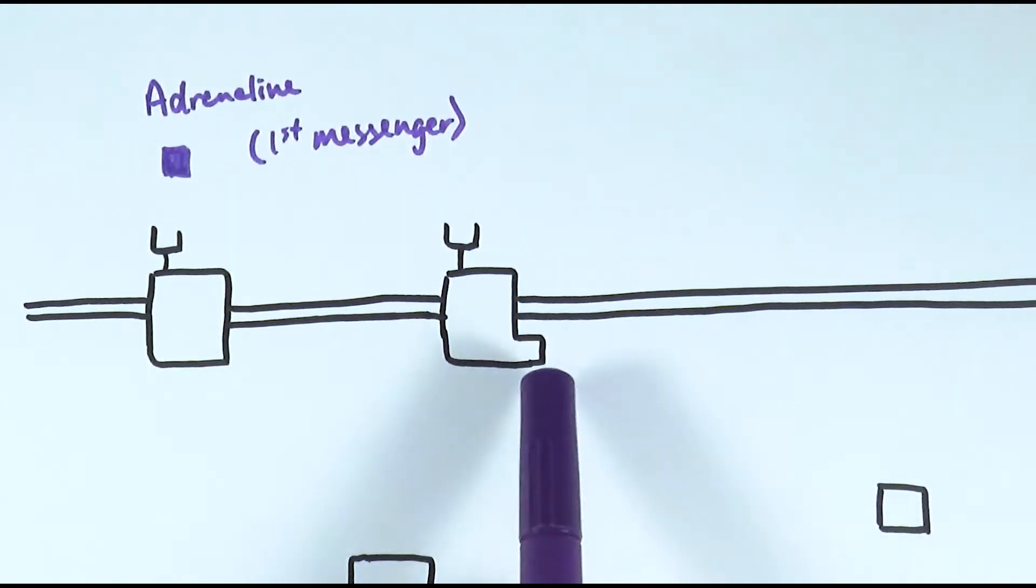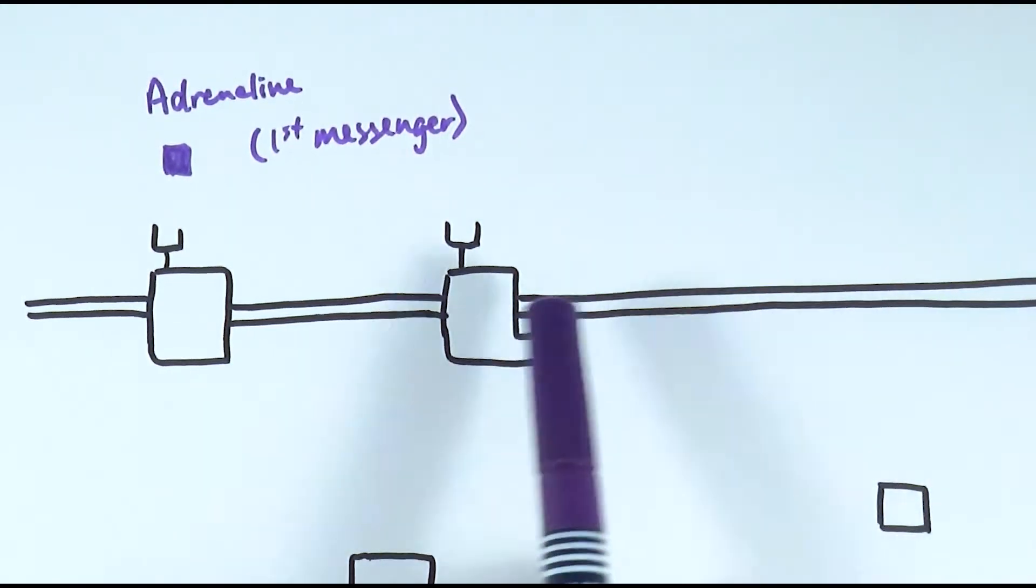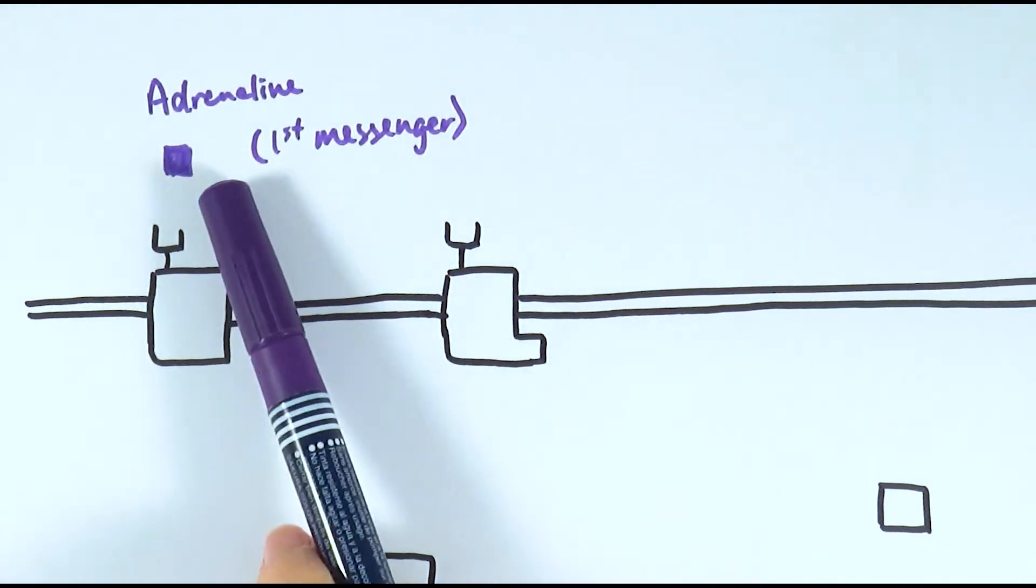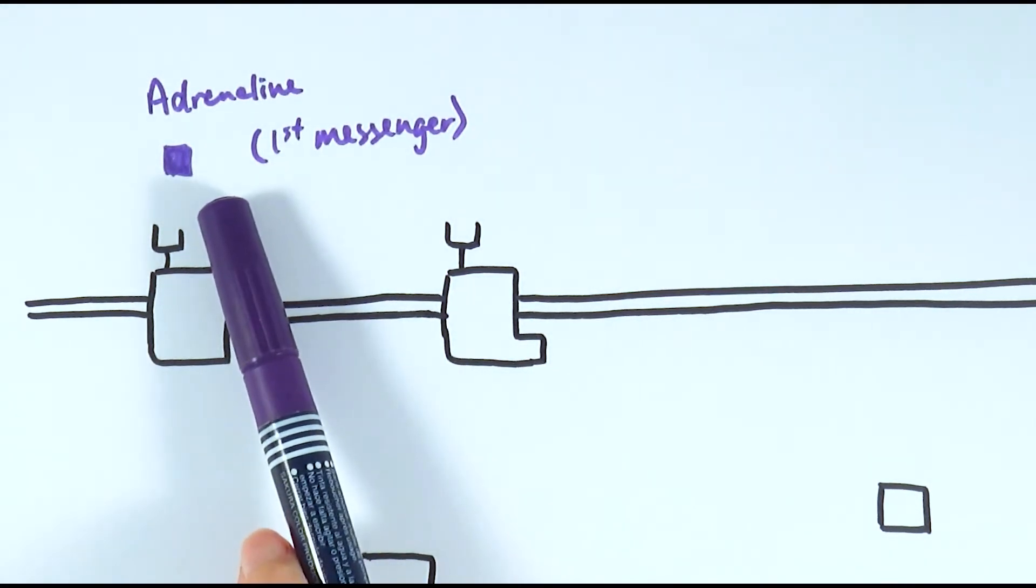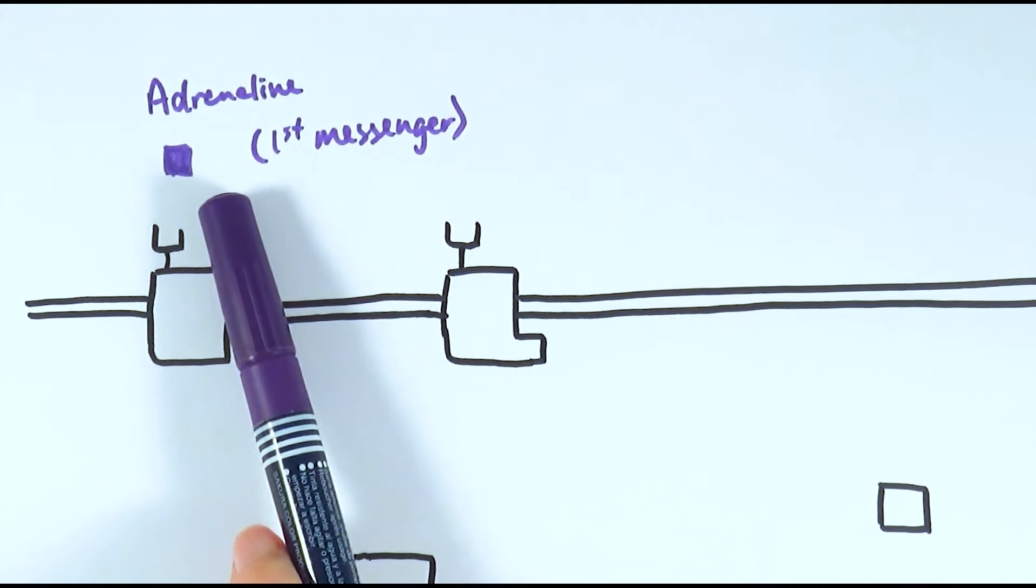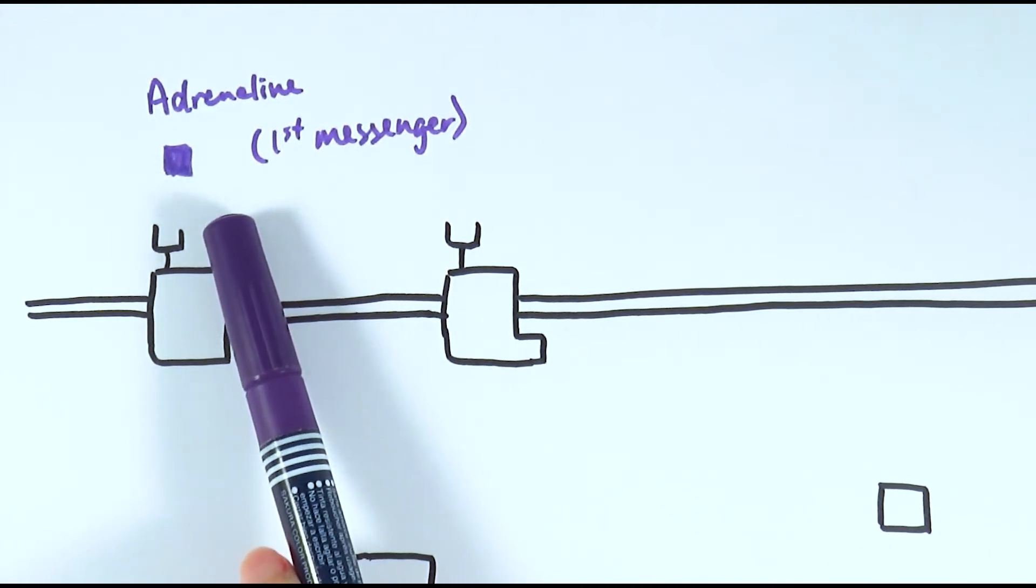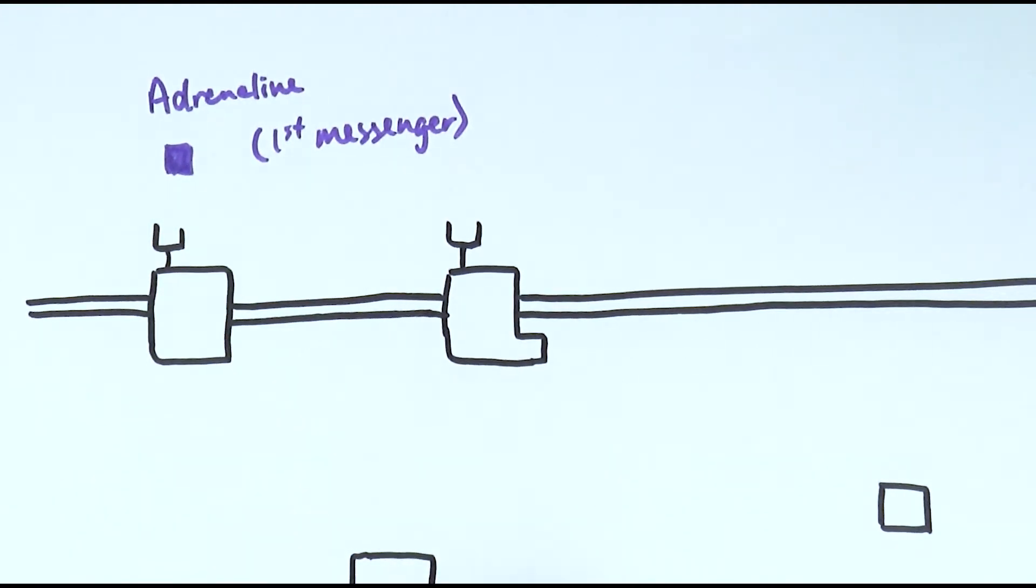To start off with, just to label some things, obviously that is the cell surface membrane and that is the adrenaline. Sometimes we call the adrenaline the first messenger as well, because it is the first chemical that brings the signal for the cell to do certain things.